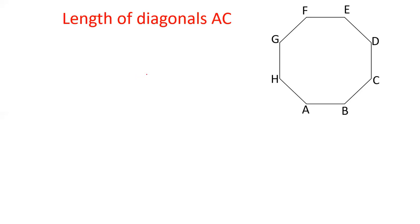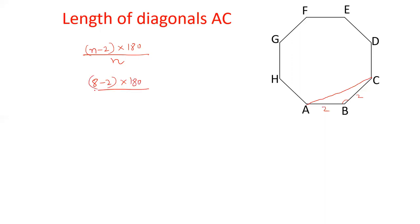First of all, we will calculate the length of AC. This side is 2 and this side is also 2. The interior angle of an octagon is calculated as (N minus 2) into 180 divided by N. So angle ABC will be equal to (8 minus 2) into 180 upon 8, that is 6 into 180 upon 8, which gives 135 degrees.